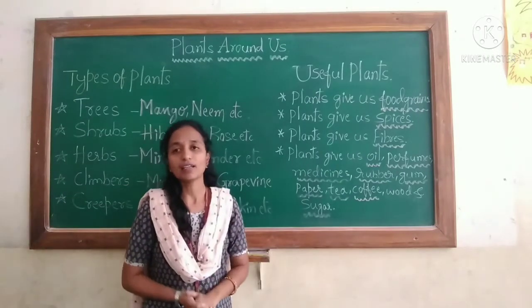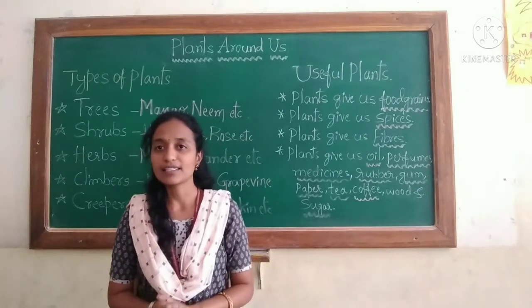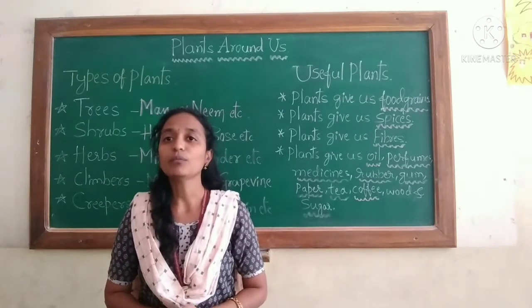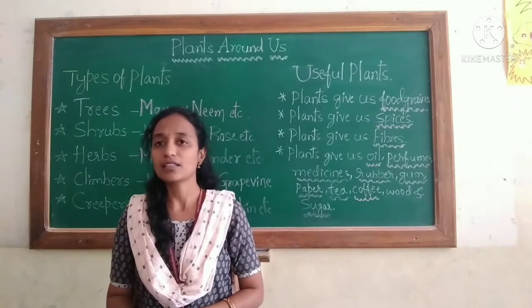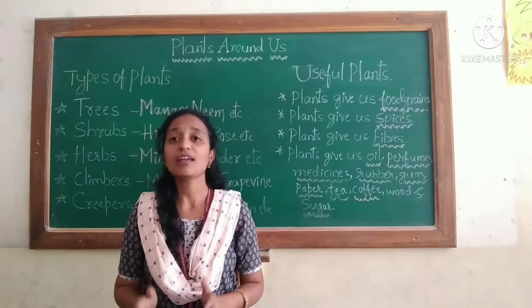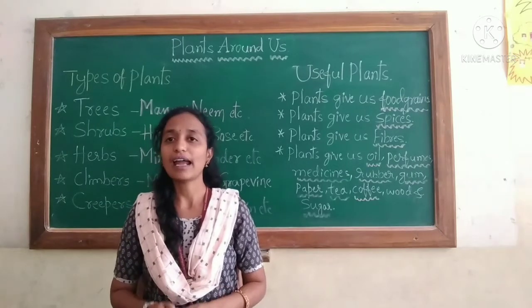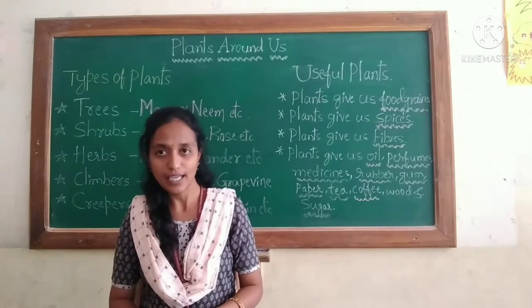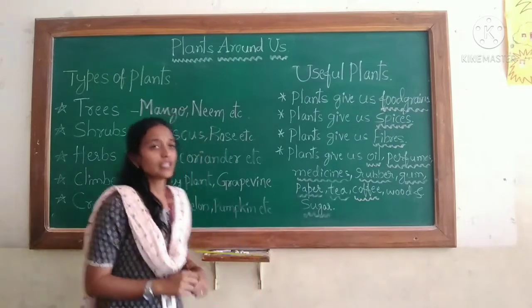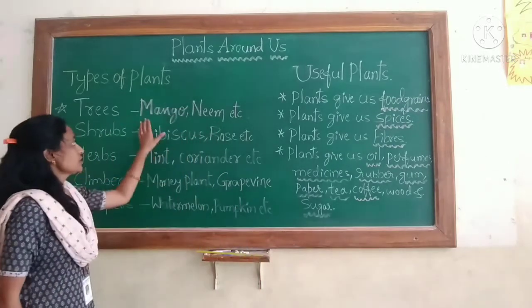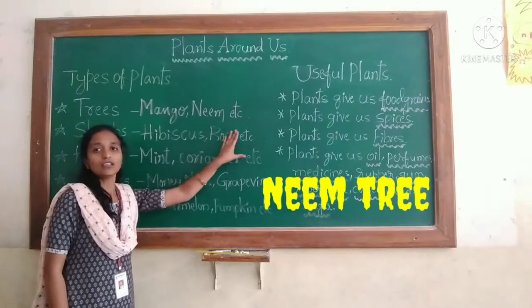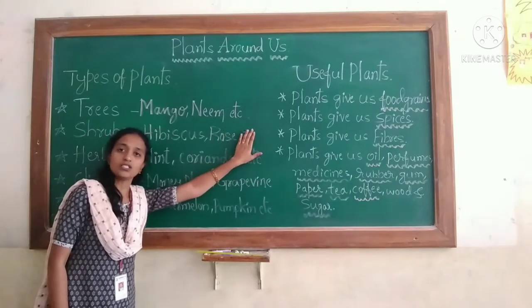What do you mean by trees, children? Tall and big plants are called trees. They have a main hard and woody stem that is called a trunk. Examples: mango tree, neem tree, and coconut tree.